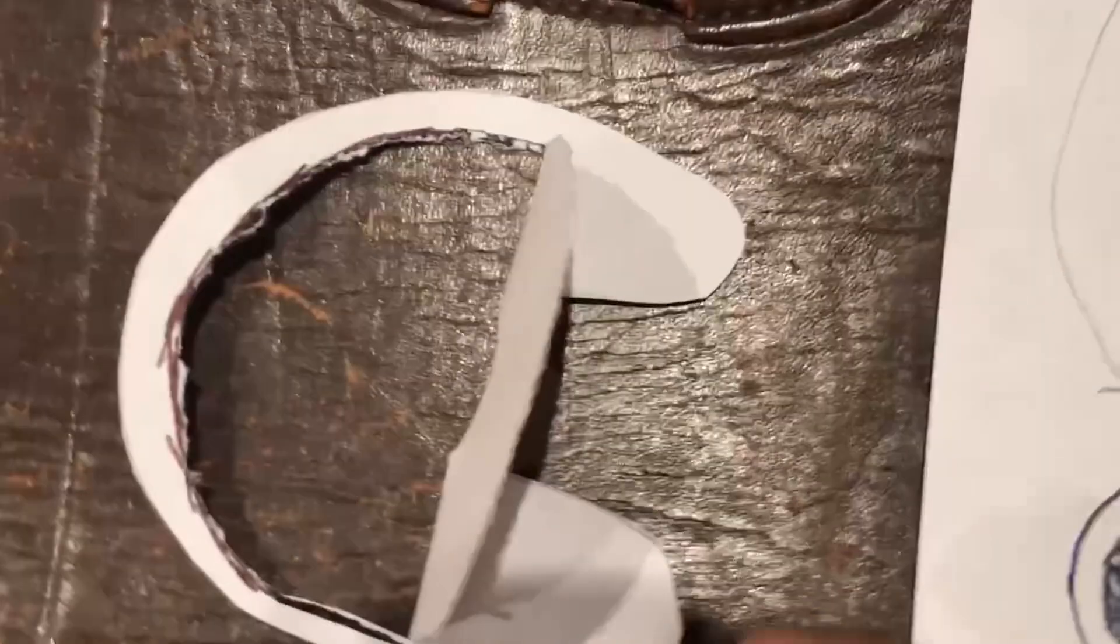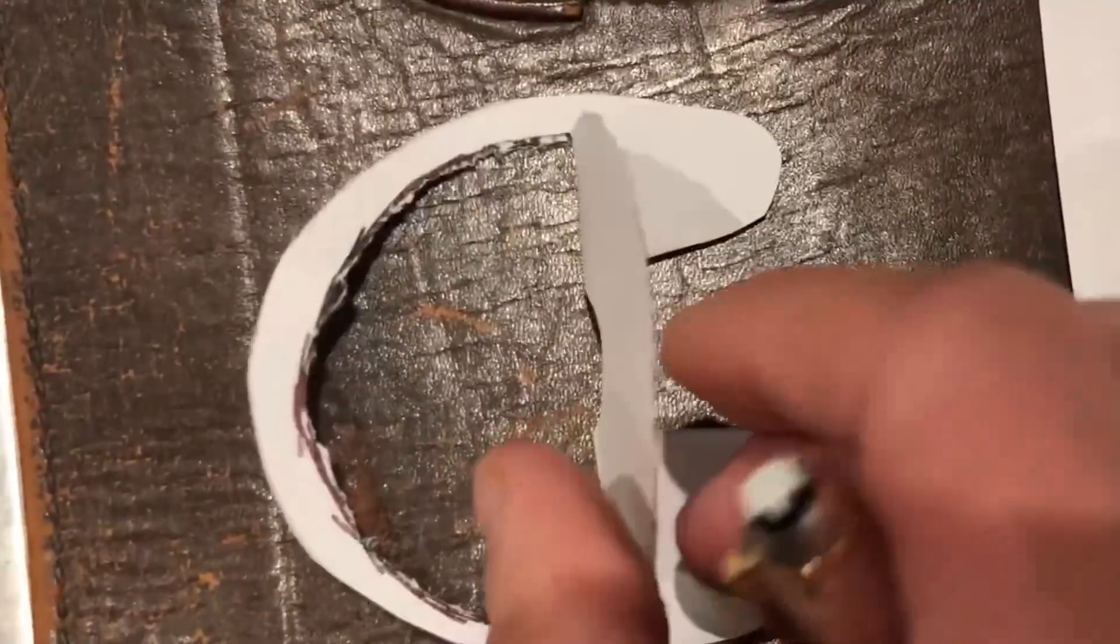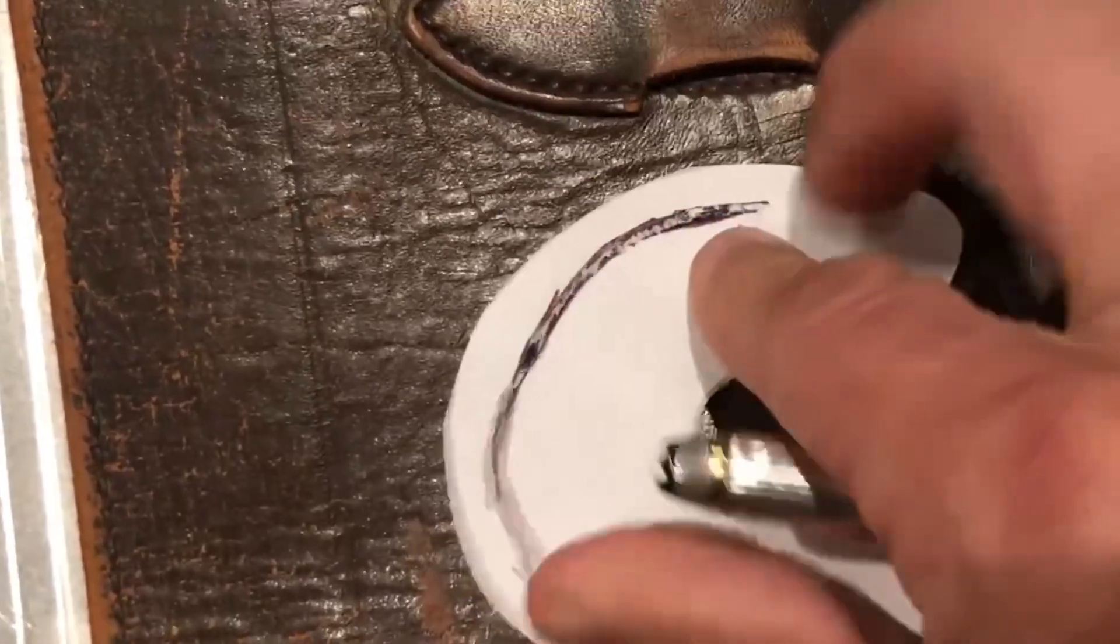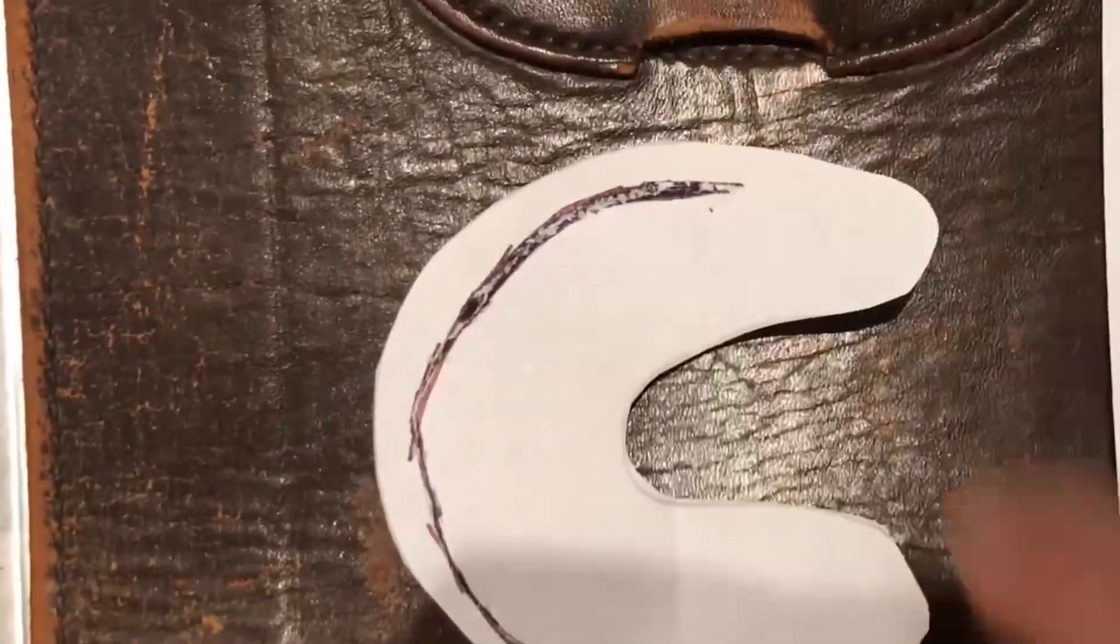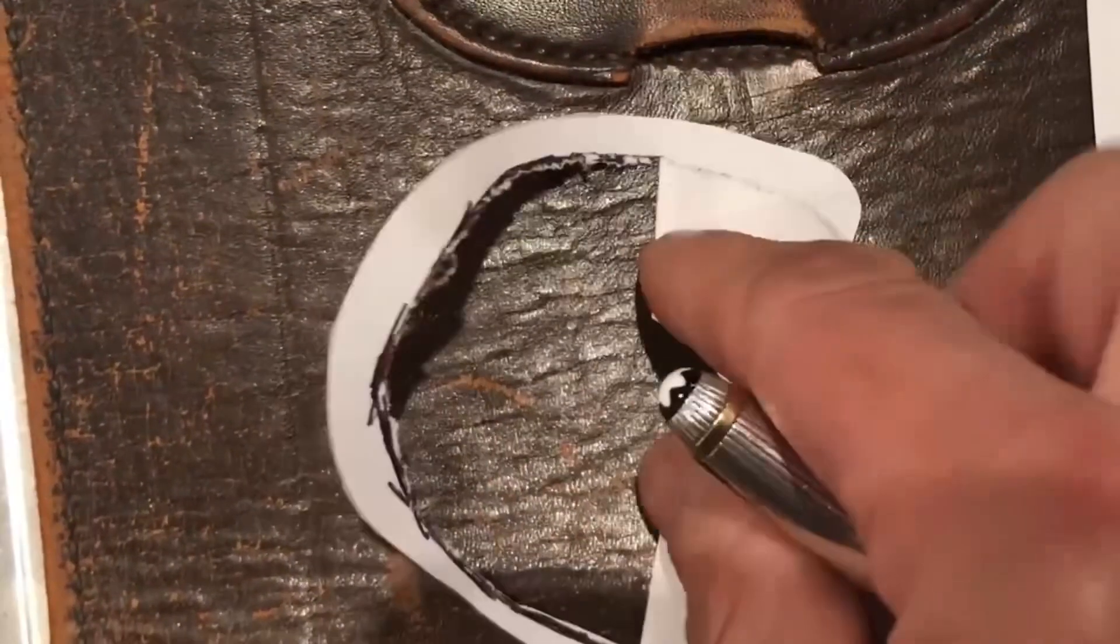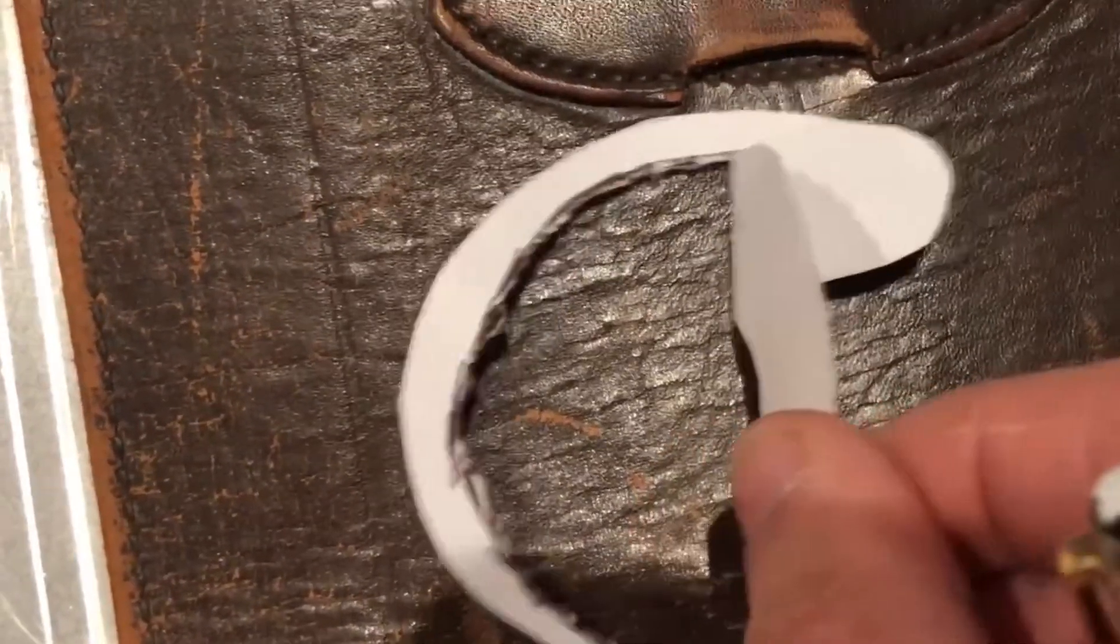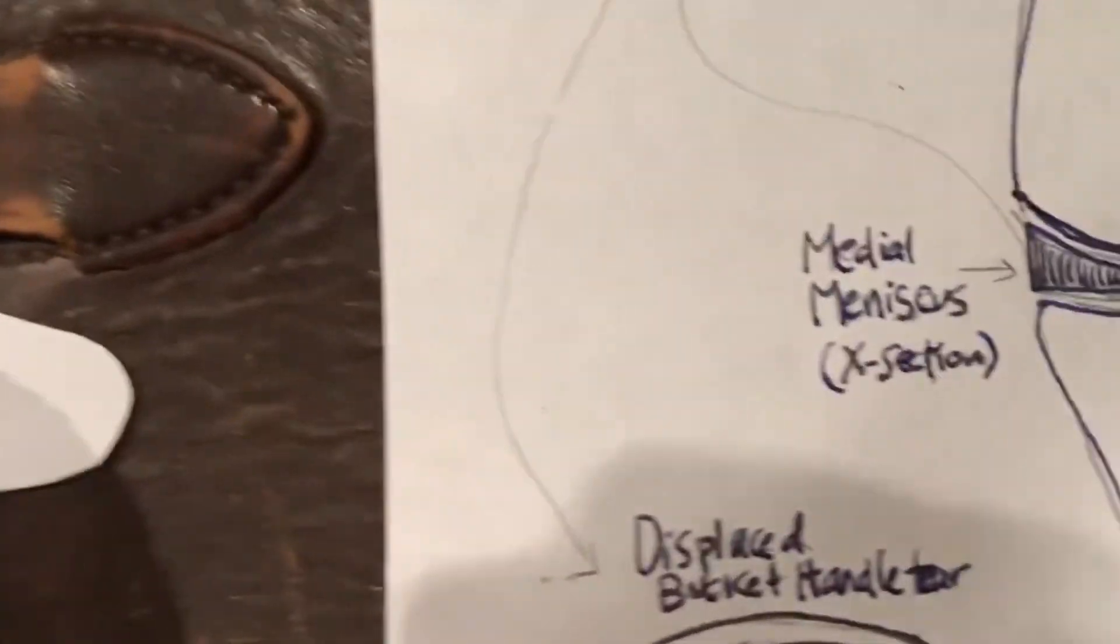So just to demonstrate what I'm talking about, this would be a non-displaced tear, but once it does this, now you have this bucket handle portion which would lock the knee.